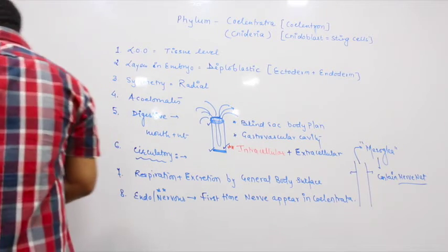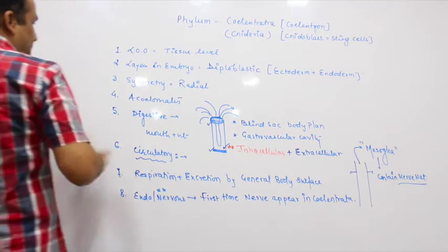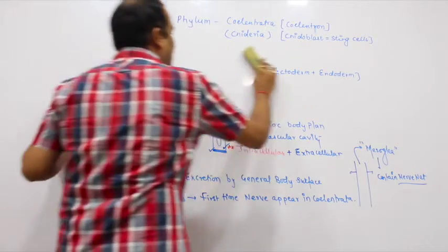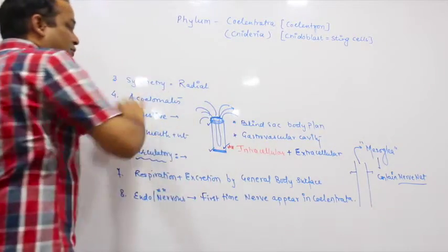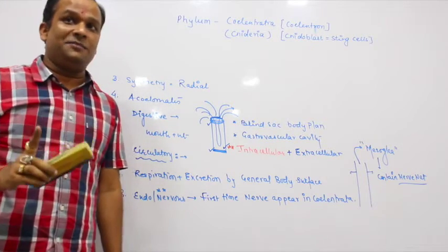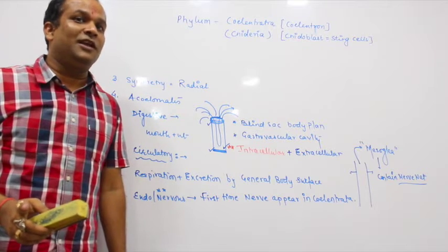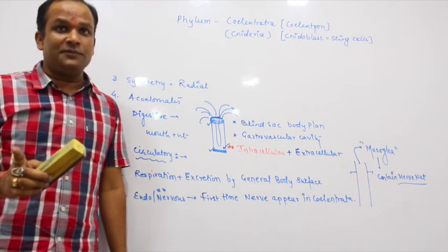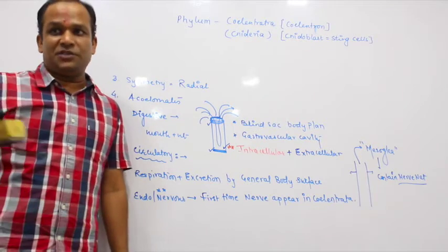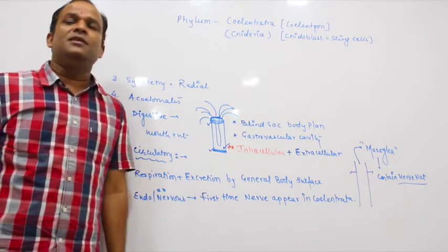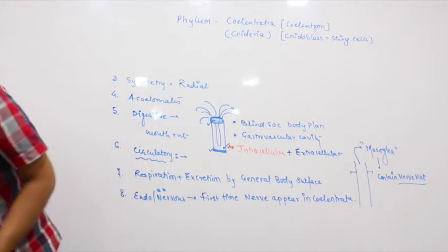Now please remember this - in exams, questions often ask which is an example of diploblastic organisms. They have taken cnidarians as the example of diploblastic organisms, not porifera. Whether you read NCERT or other textbooks, both mention diploblastic, but we have to consider cnidarians.